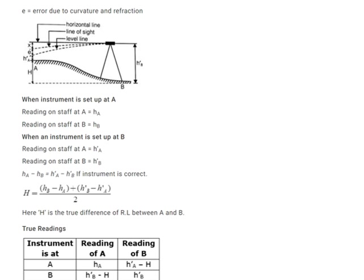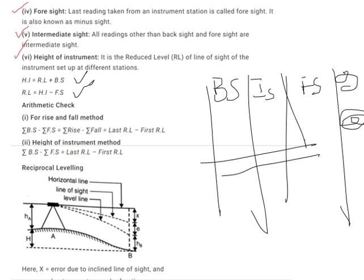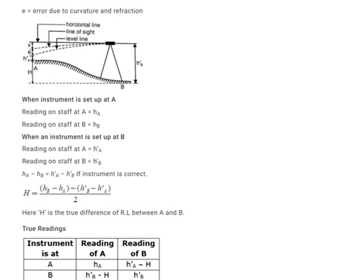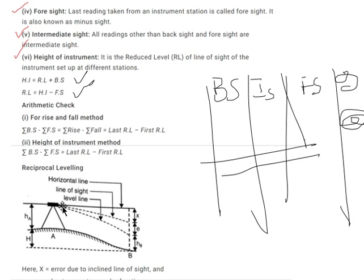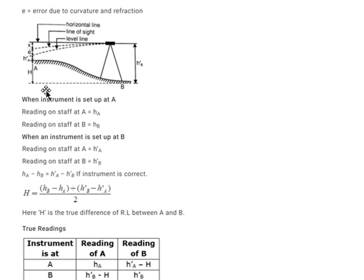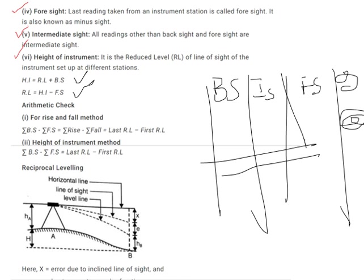Then we have reciprocal leveling, which is normally done when you have a river between two points. You take readings from A to B, then shift your instrument from A to B, and from B take readings to A. The true difference between points A and B is calculated using the reciprocal leveling formula. Reciprocal leveling is done where there are obstacles in between, but the line of sight is always available.